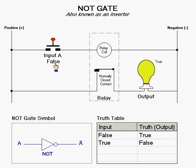Here I used a momentary push button switch to represent the input of the NOT gate, and a light bulb to represent the status of the output.